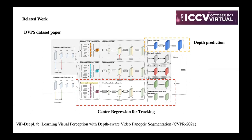First, I will review the related work. The first is the DVPS dataset paper proposed by ViP-DeepLab. ViP-DeepLab is based on Panoptic-DeepLab and adds two components: dense depth prediction, and center regression for tracking. In this way, regression centers are used for tracking.